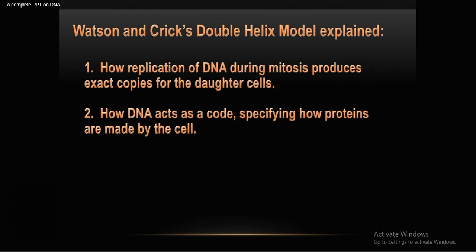The Watson and Crick double helix model explains how DNA replication during mitosis produces exact copies for daughter cells from one generation to the next, and how DNA acts as a code specifying how proteins are made by cells.